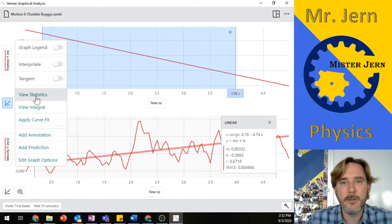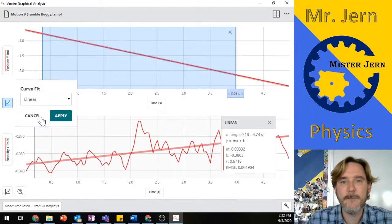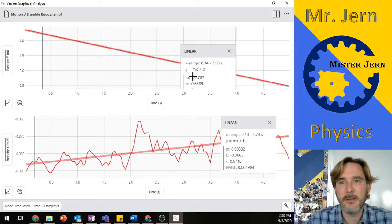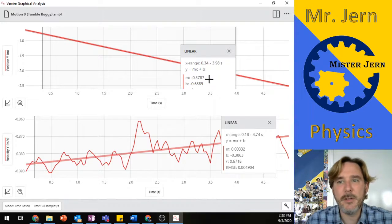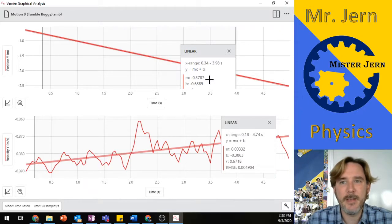So once again, I'm going to choose the curve fit, linear, definitely a line. In this case, the y equals mx plus b. The m is negative 37.8 or negative 0.3787. So that's telling me that my slope is negative 0.38 meters per second.